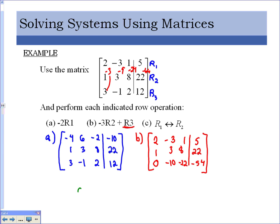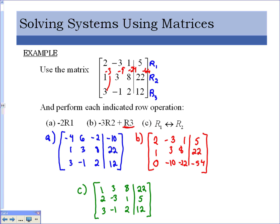Part C is the easiest — I'm just switching row 1 and row 2. Row 2 (which is 1, 3, 8, 22) moves to row 1, and row 1 becomes row 2 — they just switch places. Row 3 didn't change at all. Those are the operations we're allowed to do.